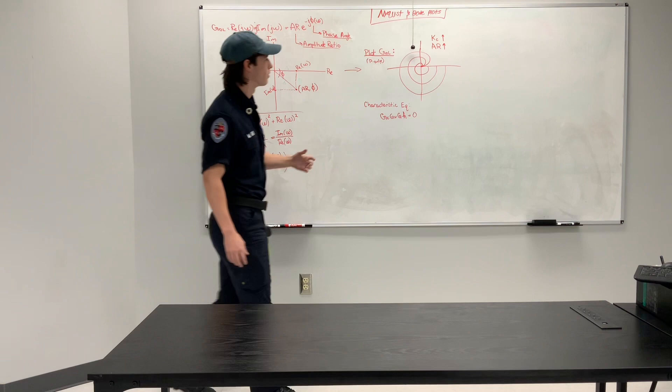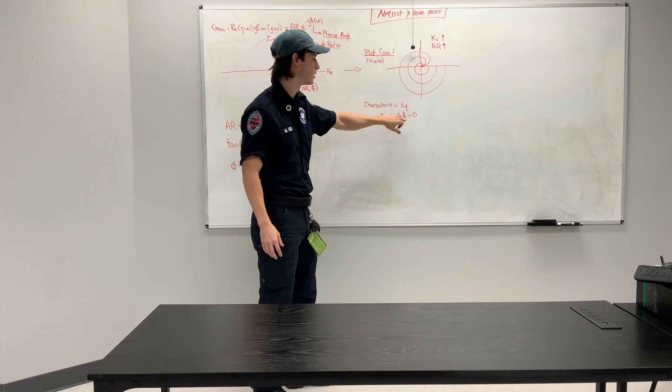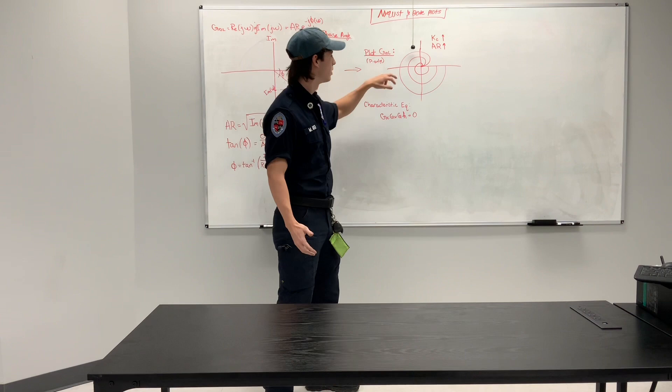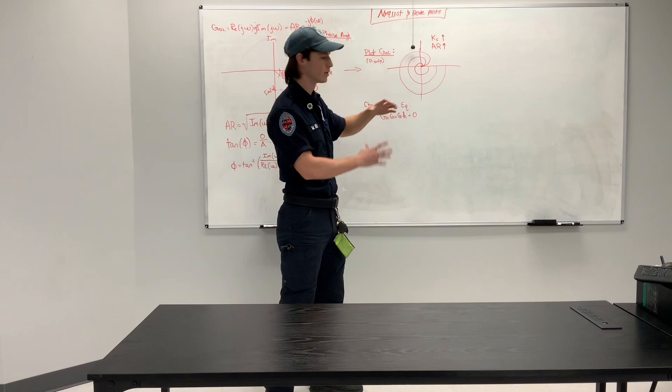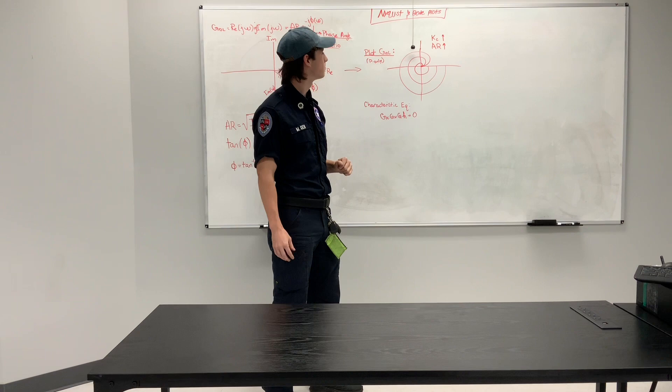Now, if you continue on to plotting GOL, you have this characteristic equation determined by the open-loop transfer function, which is, again, using our block diagram, gc gv g times h equals zero. And what you see, at least with a P-only controller, is this sort of spiral shape. And as you increase the gain, you're also increasing the magnitude of the response. So essentially, as gain grows, this spiral is getting further and further from the origin, which is pretty instrumental in determining stability.